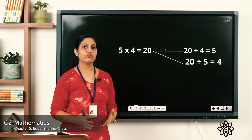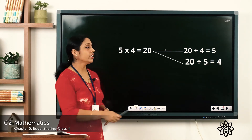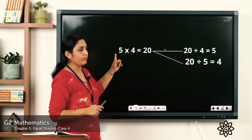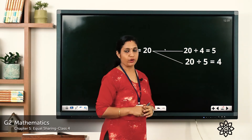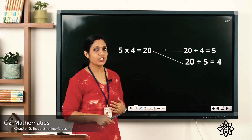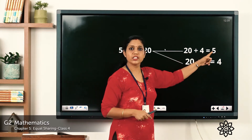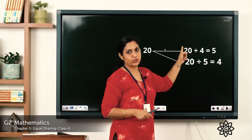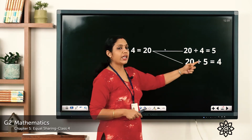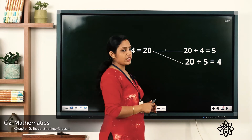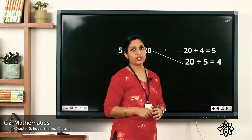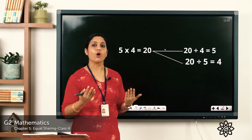One more example: 5 into 4 is equal to 20 — 5 fours are 20. The answer is 20. Now 20 divided by 4: say the table of 4 — 4 ones are 4, 4 twos are 8, 4 threes are 12, 4 fours are 16, 4 fives are 20 — so 20 divided by 4 is equal to 5. Next, 20 divided by 5: 5 ones are 5, 5 twos are 10, 5 threes are 15, 5 fours are 20 — so the answer is 4.